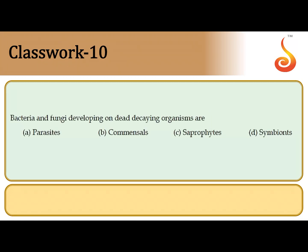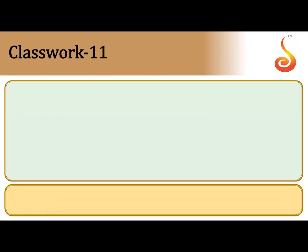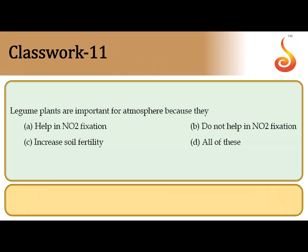Question 10: bacteria and fungi developing on dead and decaying organisms. These organisms feed on dead and decaying matter — this kind of nutrition is referred to as saprophytic nutrition. Therefore bacteria and fungi are referred to as saprophytes. So the correct answer is option C.